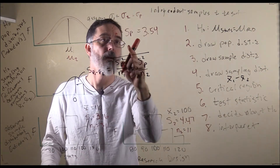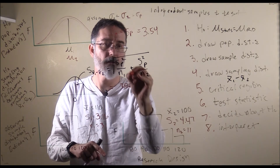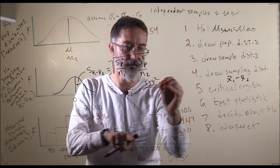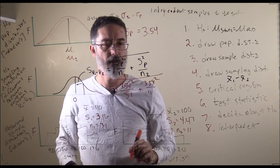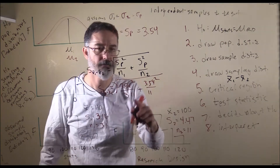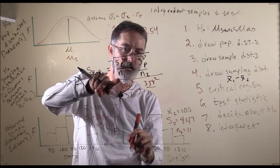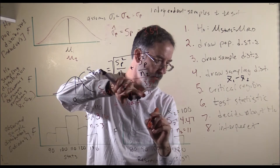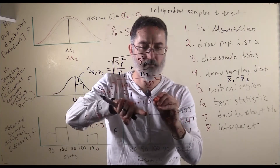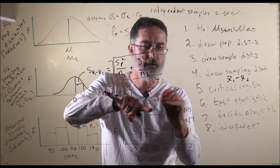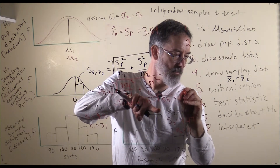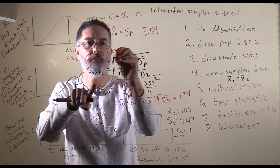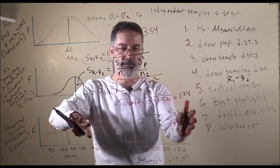Plugging in our values: 3.54 squared divided by n1, plus 3.54 squared divided by n2, all under a square root. Working through this: 3.54 times itself divided by 31 gives 0.404, plus 3.54 squared divided by 11 gives 1.13. The square root of their sum gives us a standard error of 1.24.